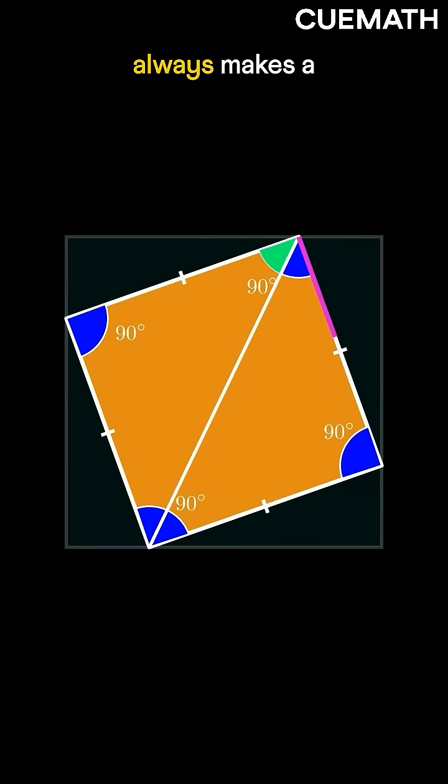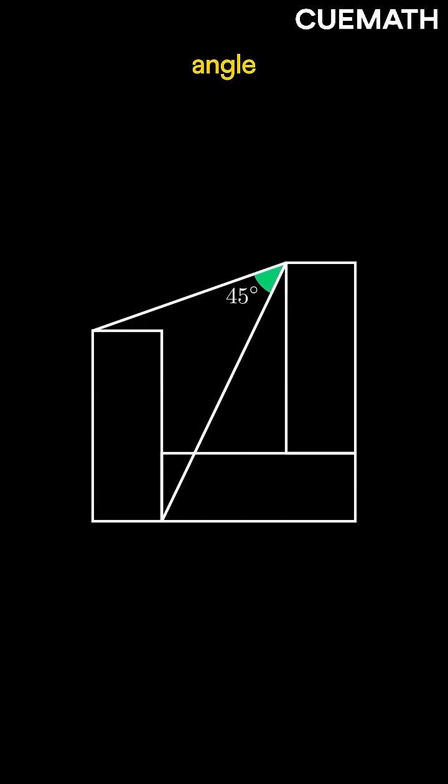Since the diagonal of a square always makes a 45-degree angle, the required angle is 45 degrees.